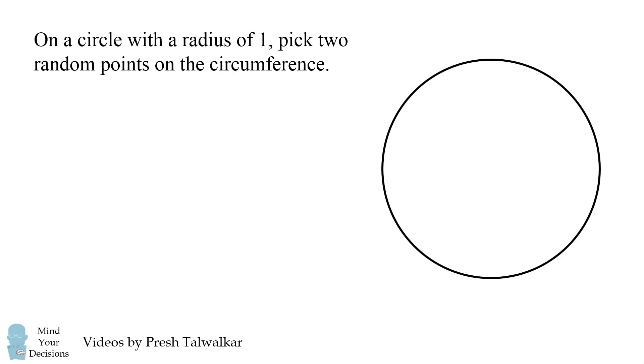On a circle with the radius of 1, pick two random points on the circumference. What is the average distance between the two points?